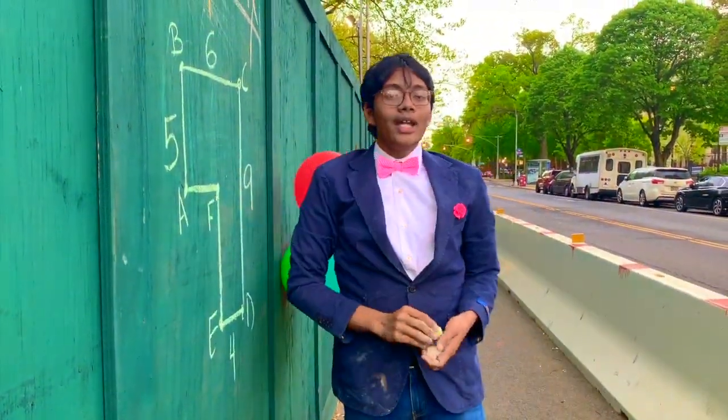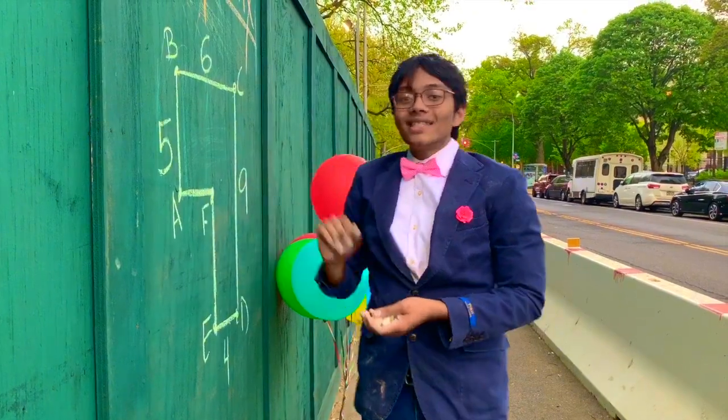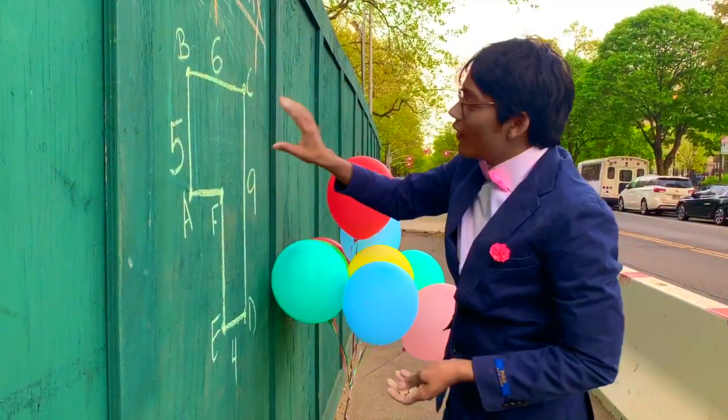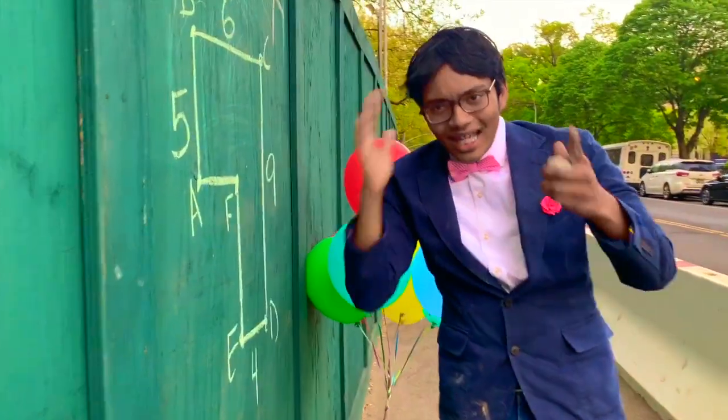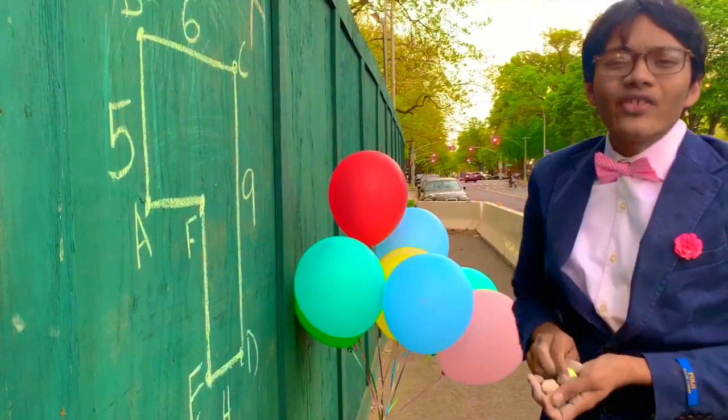Now we're ready. What is the area of this irregular polygon? So how are we going to solve this problem?